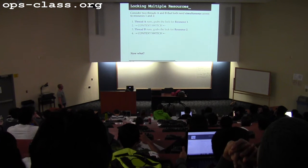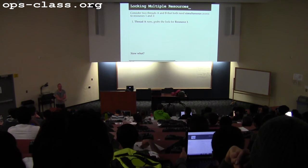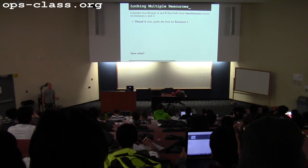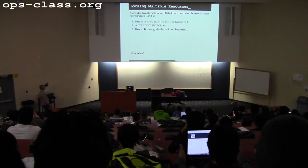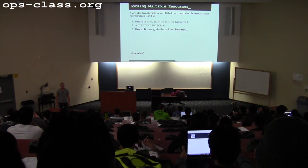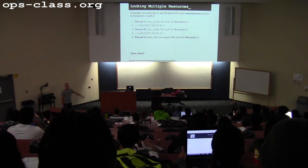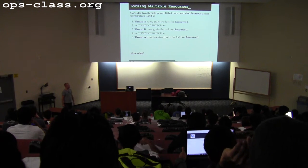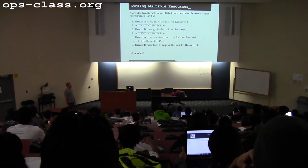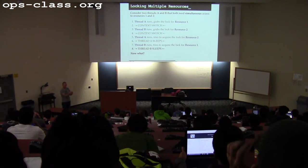Let's go through a canonical deadlock example. Thread A and thread B both need resources 1 and 2. Thread A runs and grabs the lock for resource 1. Context switch — thread B runs and grabs the lock for resource 2. Now, thread A will try to get the lock for resource 2 and sleep; thread B will try to get the lock for resource 1 and sleep. Neither will ever wake up. We have a cycle in our waiting graph: thread 1 waiting for thread 2, thread 2 waiting for thread 1. This is a deadlock.